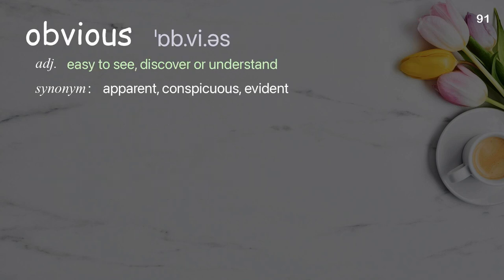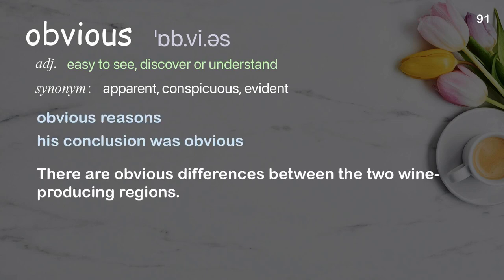Obvious: easy to see, discover, or understand. Examples: obvious reasons, his conclusion was obvious. There are obvious differences between the two wine-producing regions.